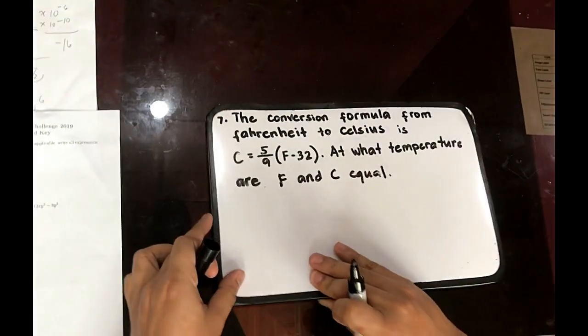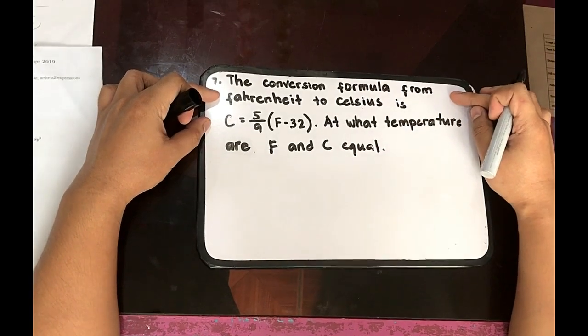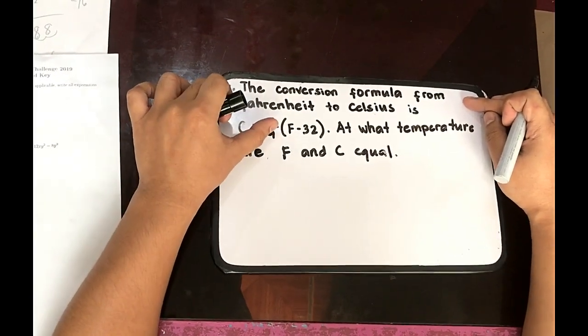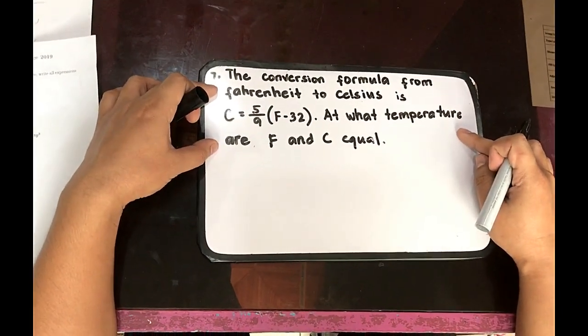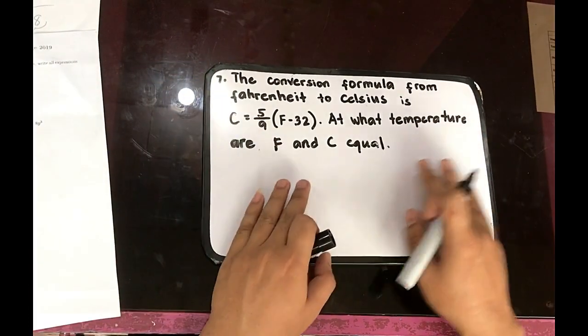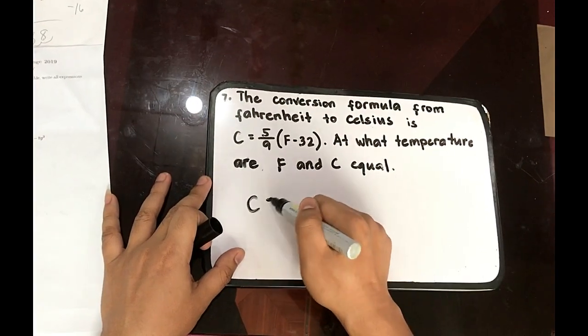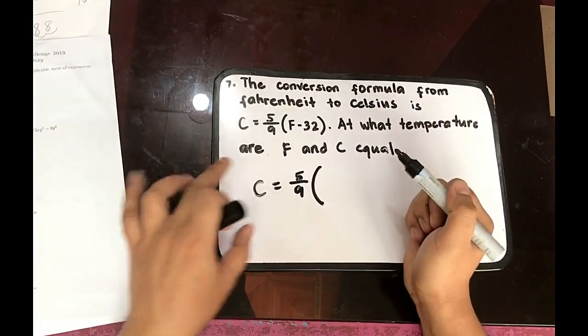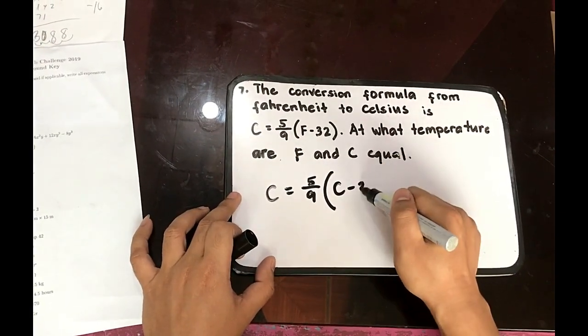Number 7. The conversion formula from Fahrenheit to degree Celsius is C is equal to 5 over 9, quantity F minus 32. At what temperature are F and C equal? So take note. Our condition is F and C are equal. So we can substitute. C is equal to 5 over 9. F and C are equal so we can substitute F to C. C minus 32.